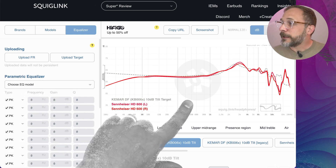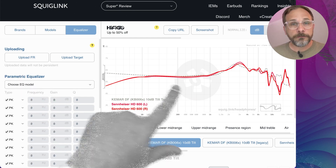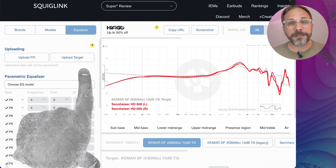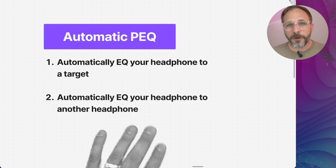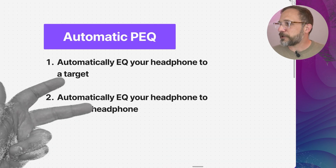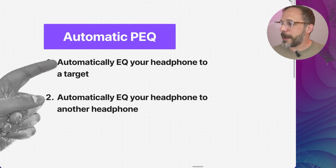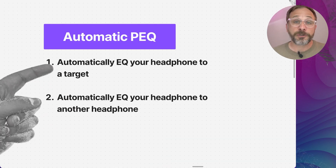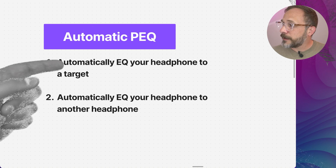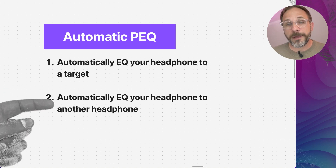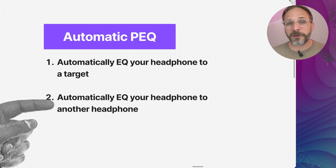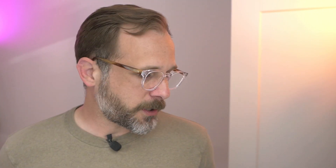All you're going to need to do is pick your headphone and what you want it to sound like. I'm going to break this down into basically two sections: we're going to cover automatically EQing your headphones to match a target response, and I'll also show you how you can automatically EQ your headphone to match another headphone. First up: EQing to targets. And before we start — what even is a target?